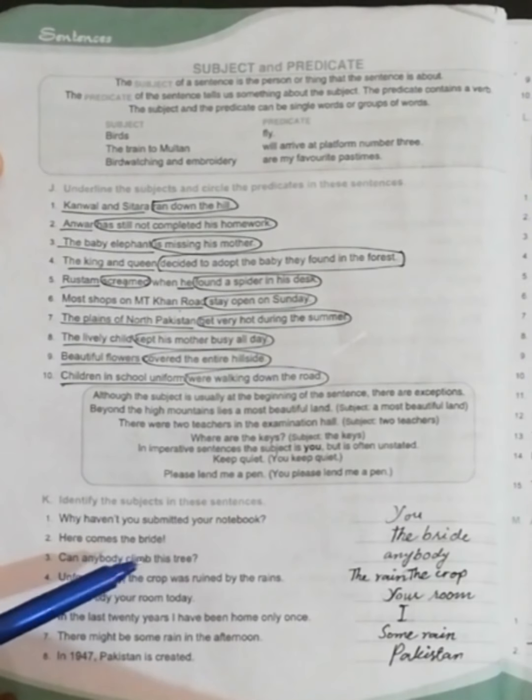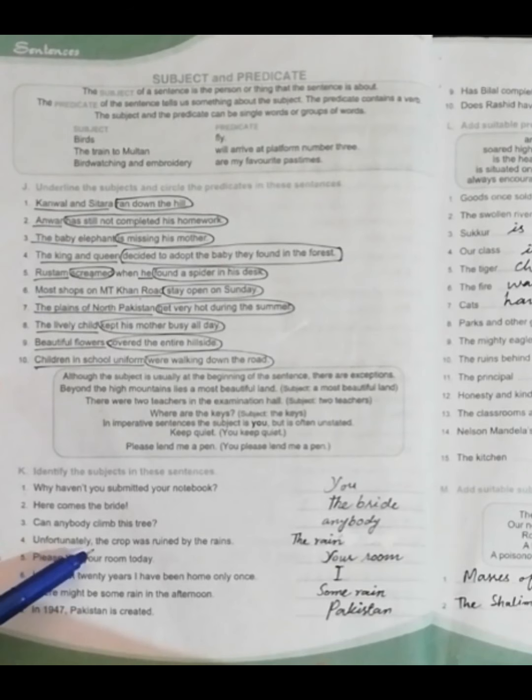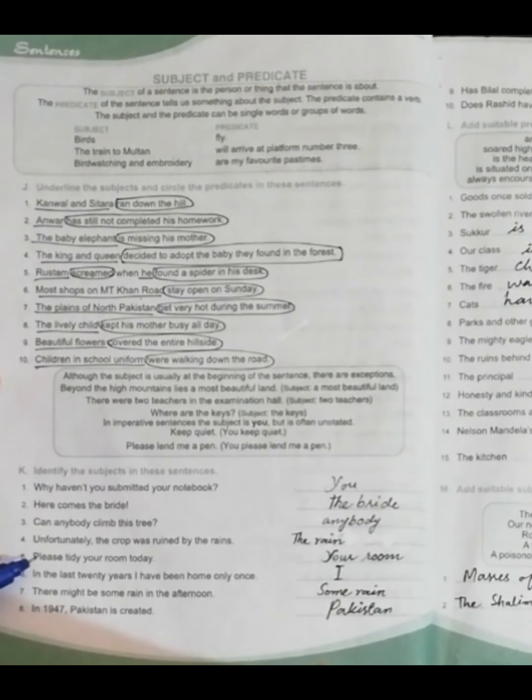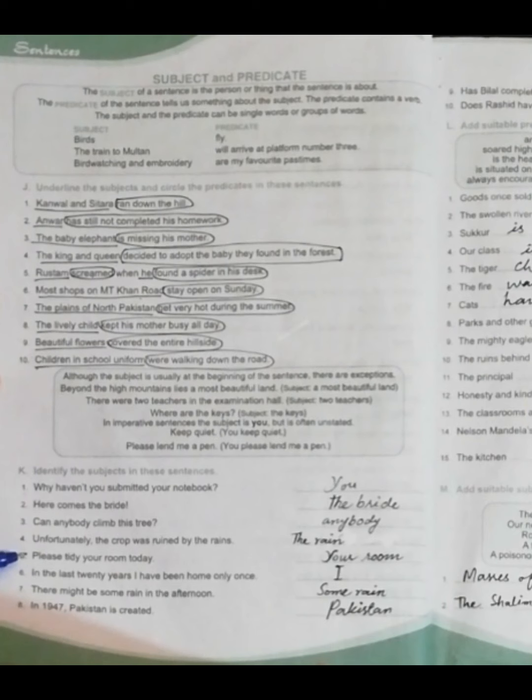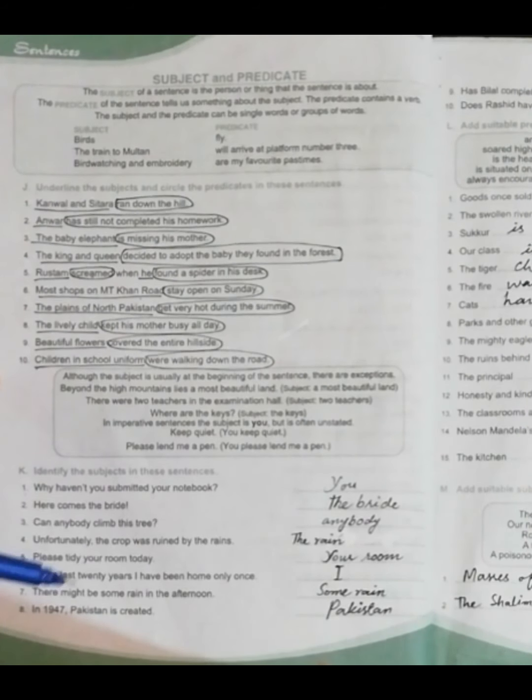'Can anybody climb this tree?' So the subject is 'anybody.' 'Unfortunately, the crop was ruined by the rains.' So the subject here is 'the rain.' 'Please tidy your room today' and the subject is 'your room.' So I have solved all the sentences for you.